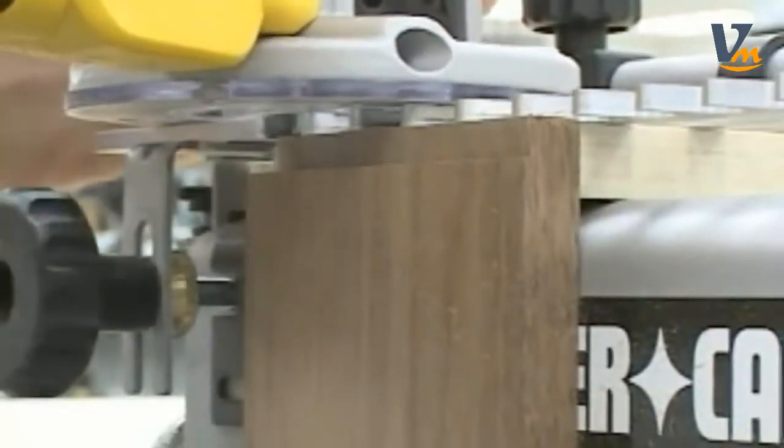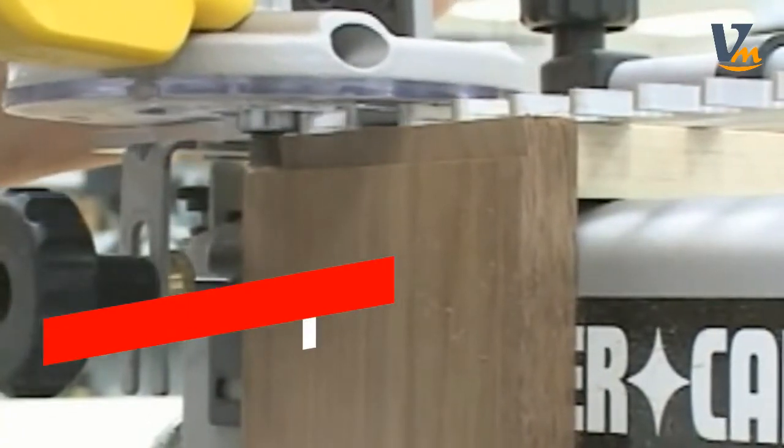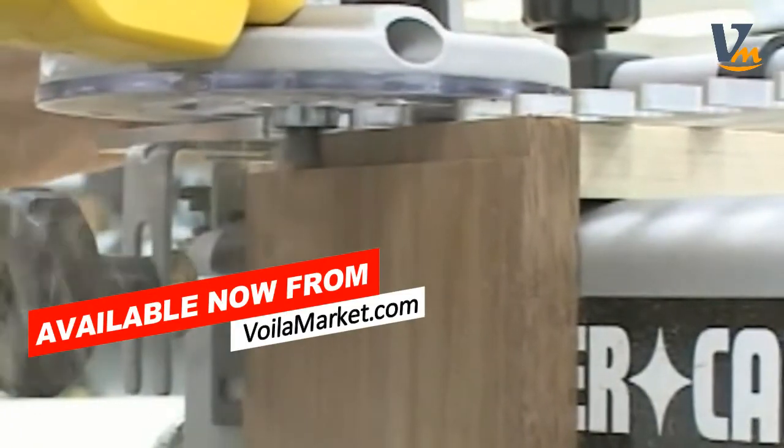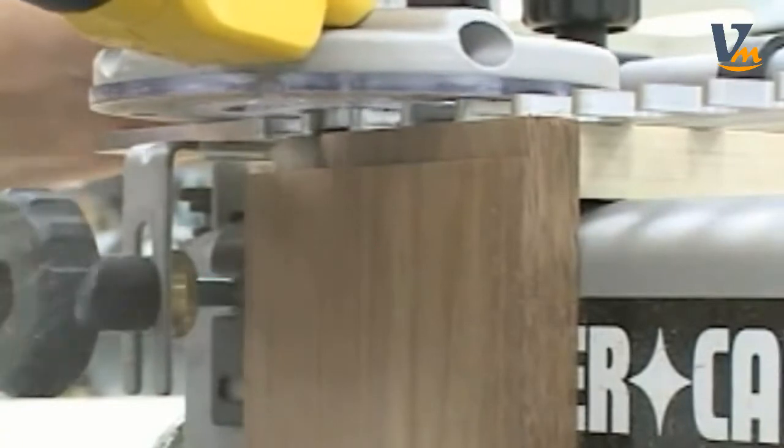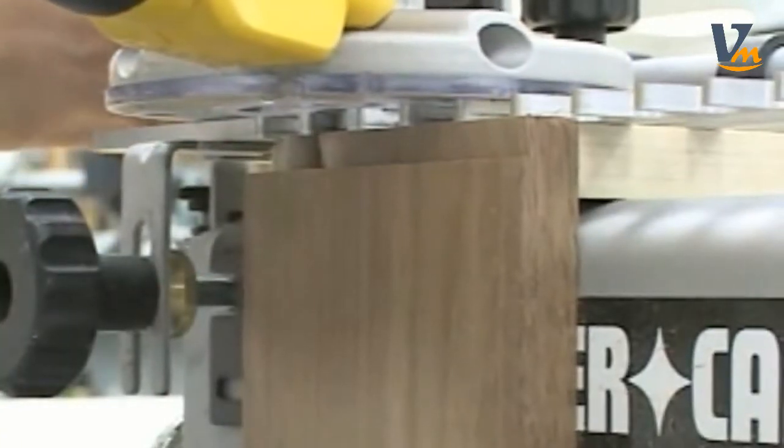Plunge into the first template finger until the guide bushing bottoms out. Roll the router around to the next finger to the right, continuing in this manner until you've completely routed the workpiece.